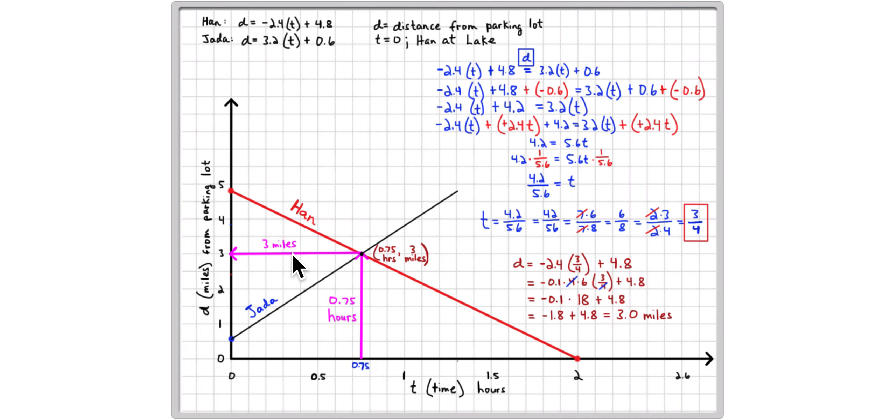When I teach a problem like this, I try to use the correct mathematical properties and the appropriate mathematical language. So I talk about using the additive inverse, a negative 6 tenths. Use the additive inverse again, a positive 2 and 4 tenths. Use the multiplicative inverse, 1 over 5 and 6 tenths. And I always use fractions as much as I can. Factor out the sevens, factor out the twos, and you get an answer of 3 fourths without using a calculator.